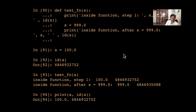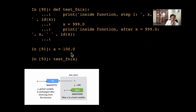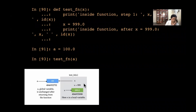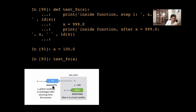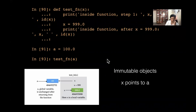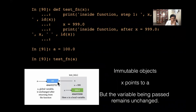To illustrate: a is 100, and when I call test_function, x points to 100 — the same object. When I make the change to 999.0, x now points to the new object 999, with a different id. x originally pointed to the same object as a, but once changed it points to a new object, and this does not affect a.